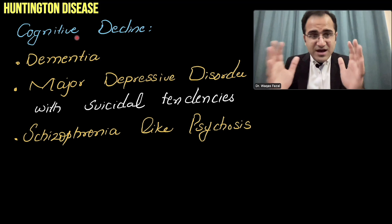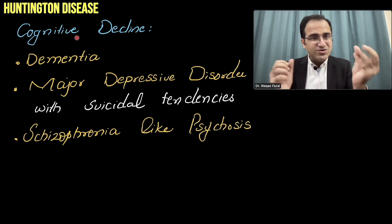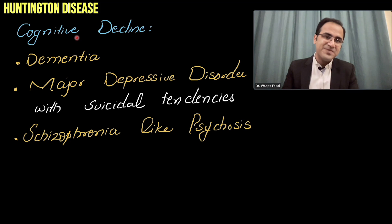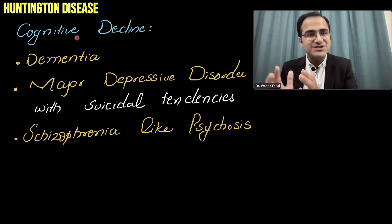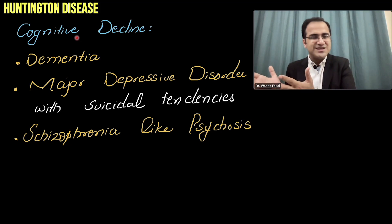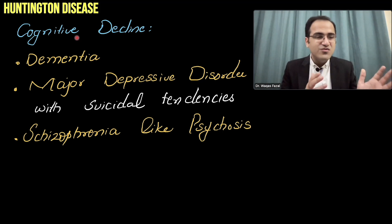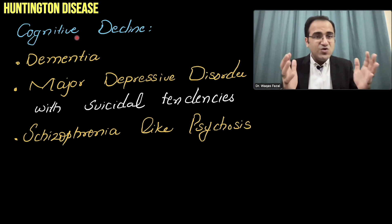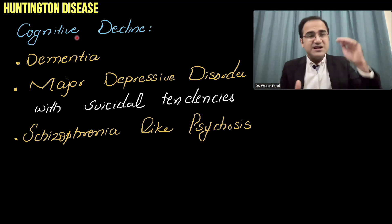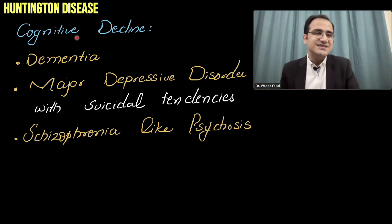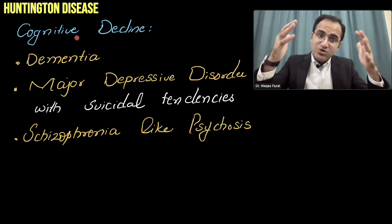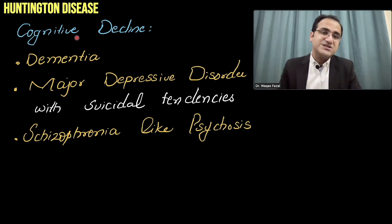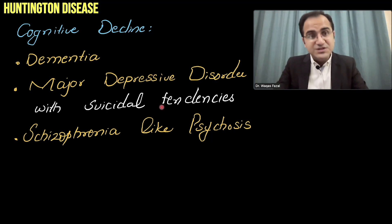Alongside movement disorders, these patients experience significant cognitive decline. A major problem is major depressive disorder: these are often young patients at the peak of their lives with a debilitating disease. The disease itself is depressing and there is also pathological depression, associated with suicidal tendencies — suicide is one of the common causes of death.